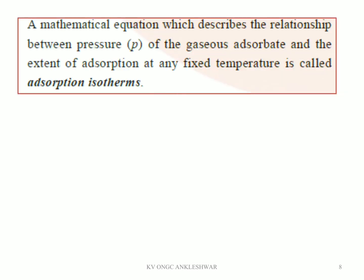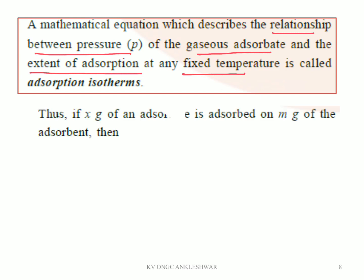Now our next important topic: what is the adsorption isotherm? Isotherm means fixed or constant temperature. It is a mathematical equation which describes the relation between the pressure P of the gaseous adsorbate and the extent of adsorption — that is, how much the molecule is adsorbing onto the solid surface at a particular temperature. This mathematical equation is called the adsorption isotherm.